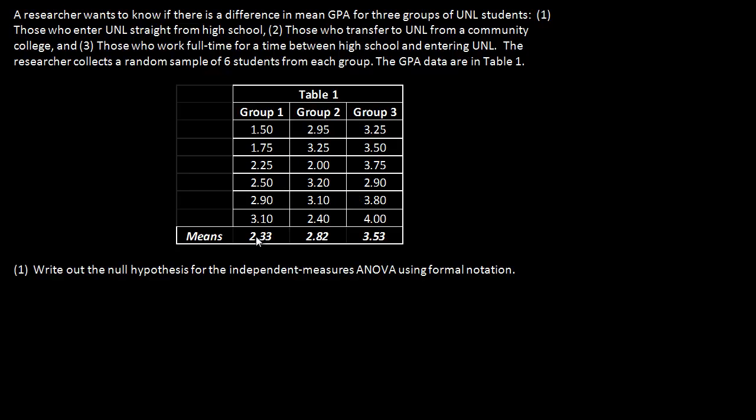From the means 2.33, 2.82, and 3.53, it looks like there is some difference between these three groups. And to find out if there is any difference or not is the purpose of ANOVA.